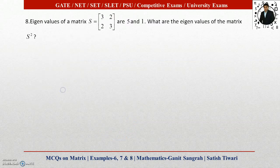Moving to the next question, number 8: Eigenvalues of the matrix S [3, 2; 2, 3] are 5 and 1. So eigenvalues are already given here. Then what are the eigenvalues of the matrix S²?